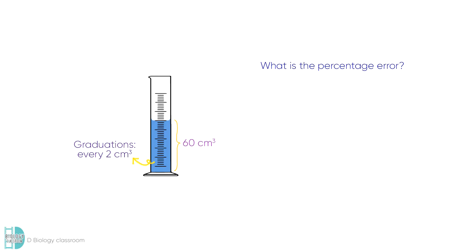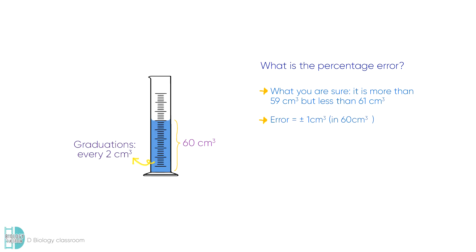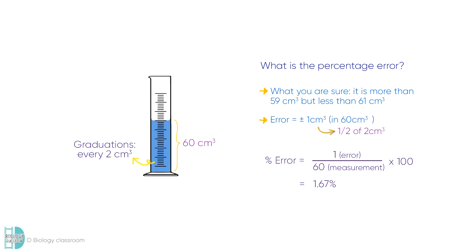Here is the answer. You could be sure that you had more than 59 cm³ but less than 61 cm³ when making the measurement. So your error would be 1 cm³ in your reading — it is half of 2 cm³. The percentage error would be 1 over 60 times 100, which is 1.67%.